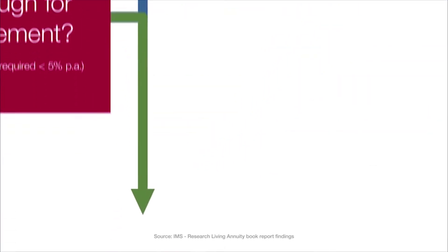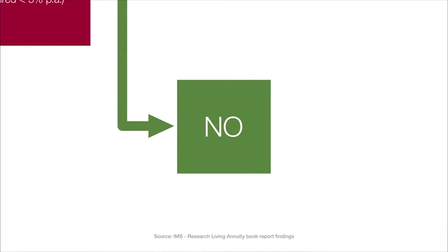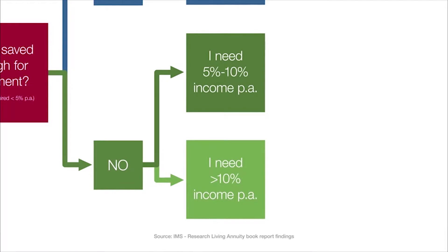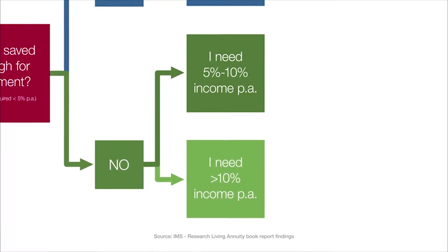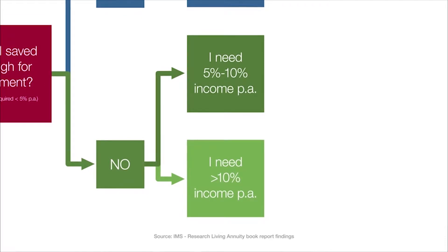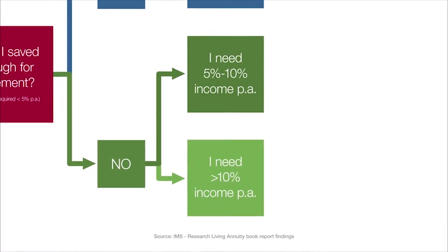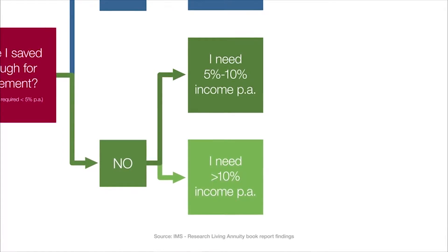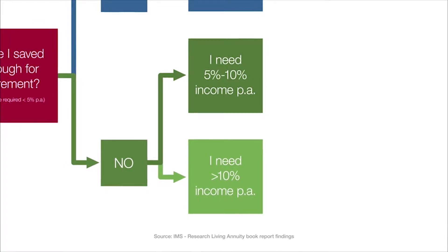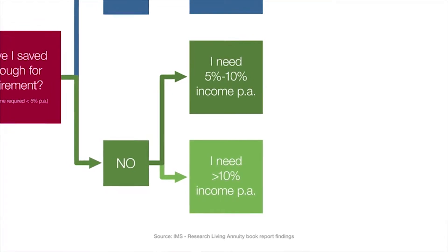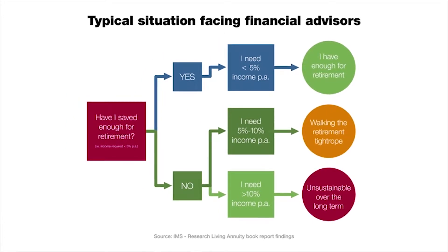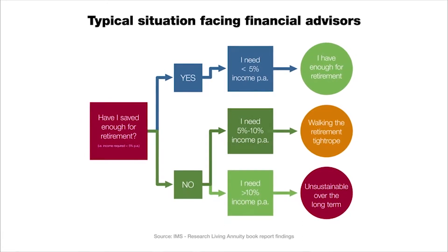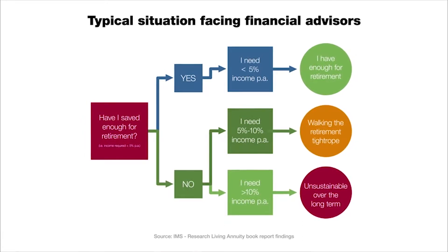Then there is the group where the income need is bigger than five percent. You sit with two categories. Those who need a percentage income bigger than 10% — that is unsustainable. There is no pension fund product in the world that will be able to sustain an income at 10% or higher over a period of 25, 30 or 40 years. Those people, unfortunately, have to fall back on other means — support from family and friends — and will not have a comfortable retirement.